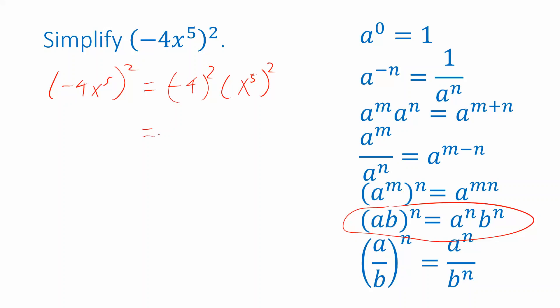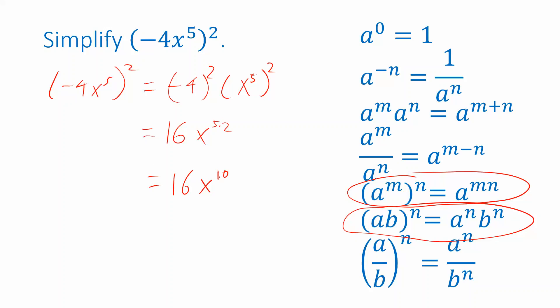Now negative 4 squared is easy to simplify — that's positive 16. And then I have x to the fifth in parentheses raised to the two. So again, I've got a situation where there are two exponents involved. That looks like this property, which tells me that if I have an exponential expression raised to another power, I can just multiply the two powers together. So instead of writing x to the fifth quantity squared, I can just write x to the fifth times 2. And 5 times 2 is 10. So a simplified version of this expression is 16x to the tenth.